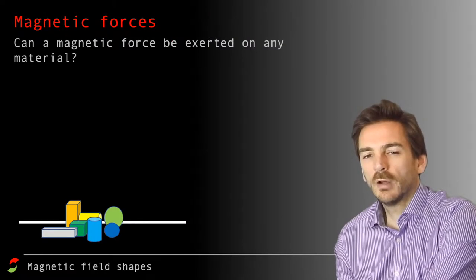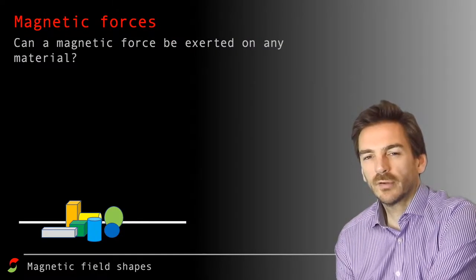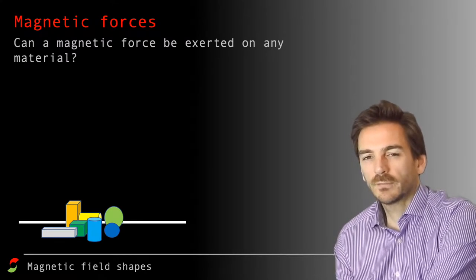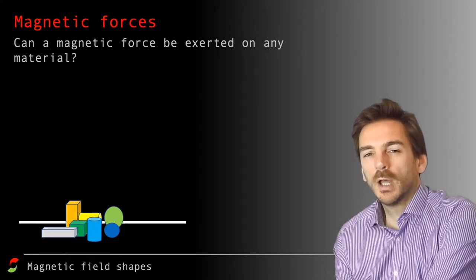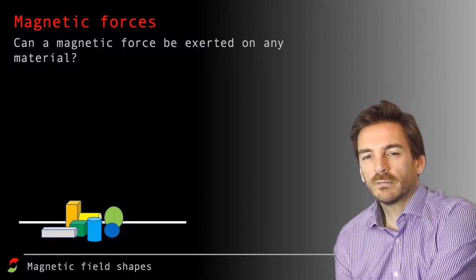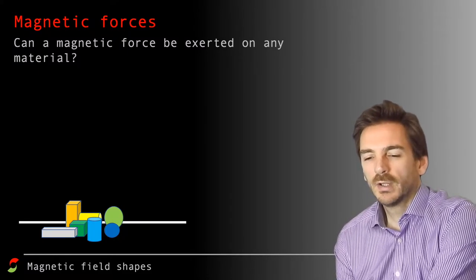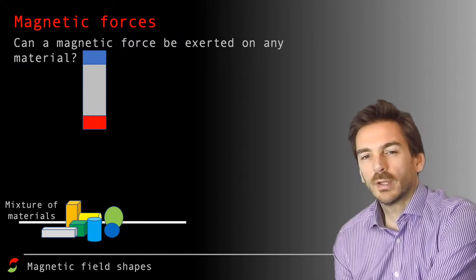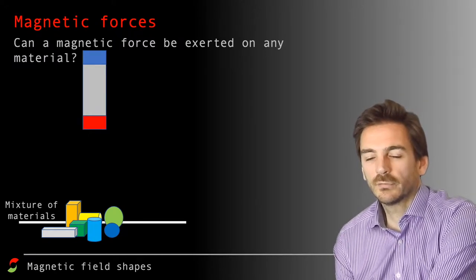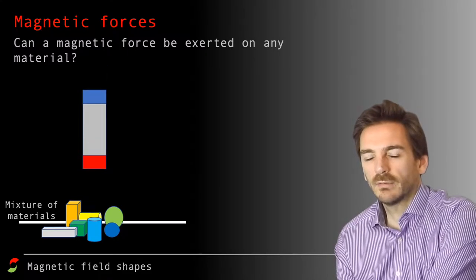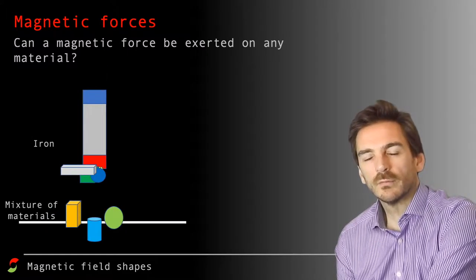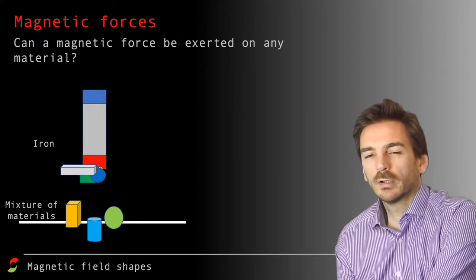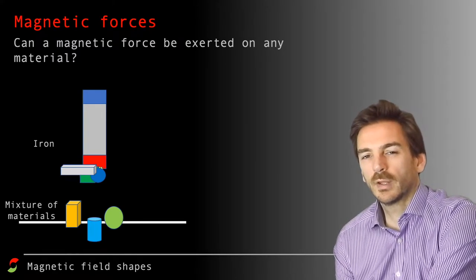So we're going to start off by looking at what type of materials are magnetic and affected by magnetic fields. You may have done this experiment in the lab where you've had a mixture of materials, everyday materials, and you've been given a bar magnet to test which of those experience magnetic forces. When you put them there, you find out that there's only a handful of materials that actually get attracted to the magnets.